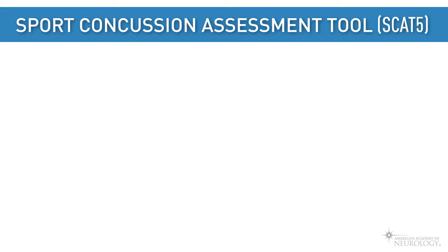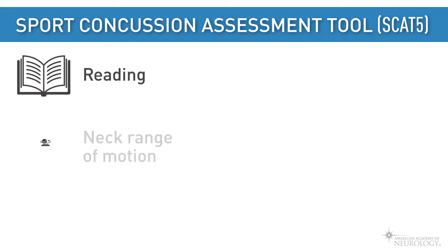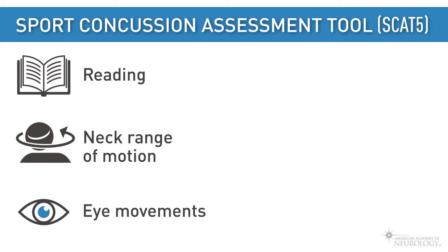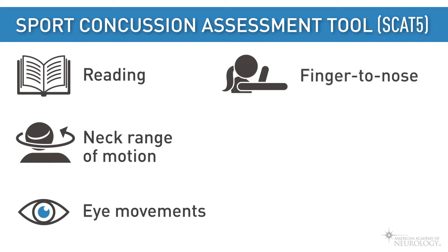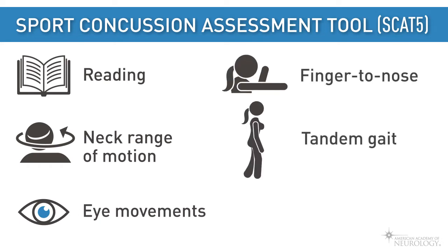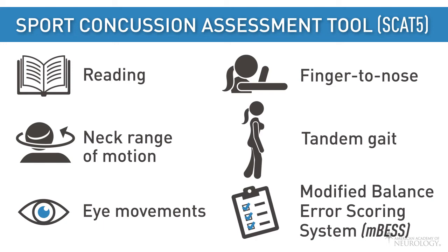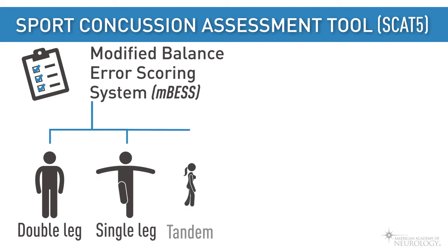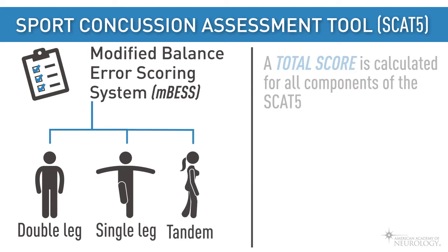Additionally, the SCAT-5 includes assessment of reading, neck range of motion, eye movements, finger-to-nose, tandem gait, and the Modified Balance Error Scoring System, or MBES, which tests balance in double leg, single leg, and tandem stance. A total score is calculated for all components of the SCAT-5.